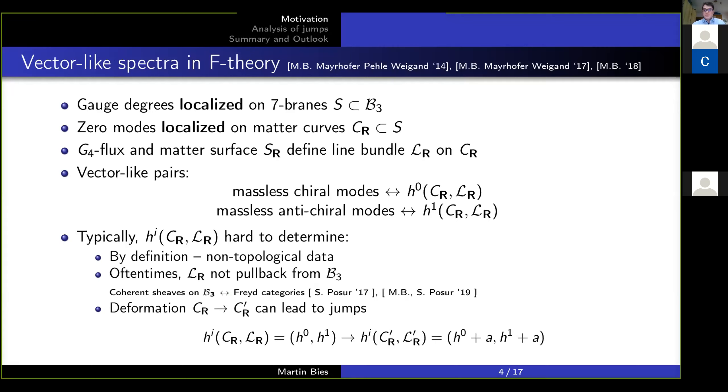More explicitly speaking, a line bundle is a collection of points on that curve, and I'm telling you to find functions which vanish in some of these points to a specified order and have poles in other points to at most that order, and the collection of these functions is the number of sections or, in physics terms, the masses chiral-modes in such a vacuum.